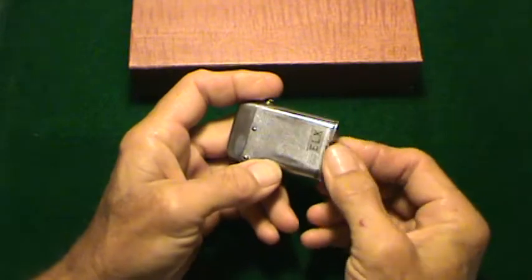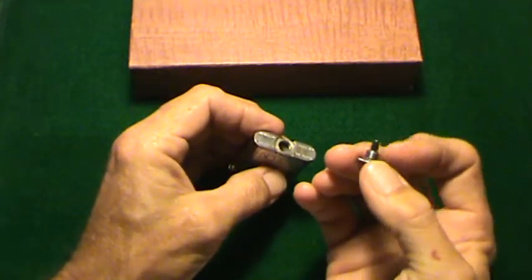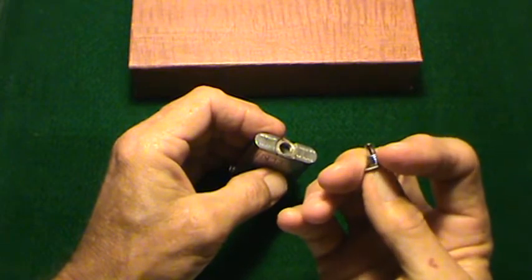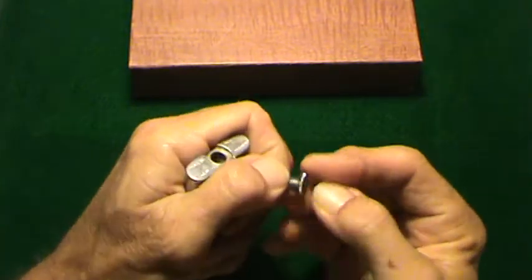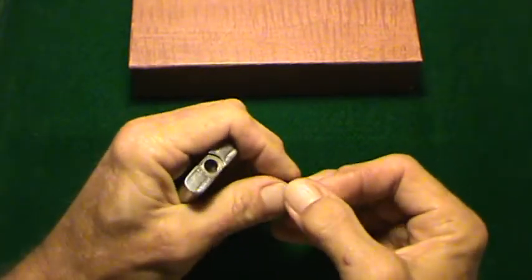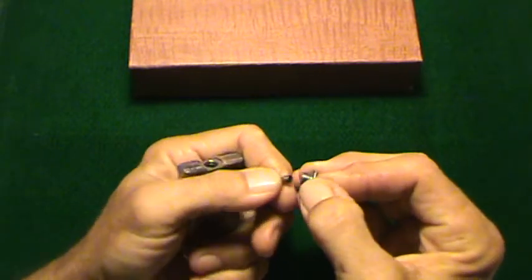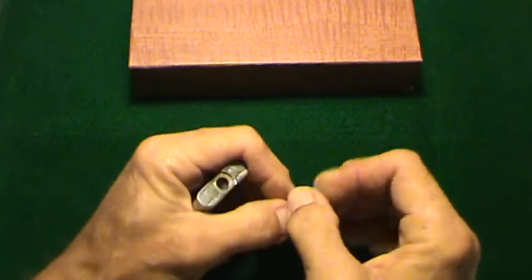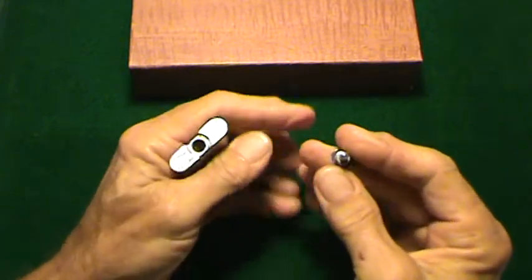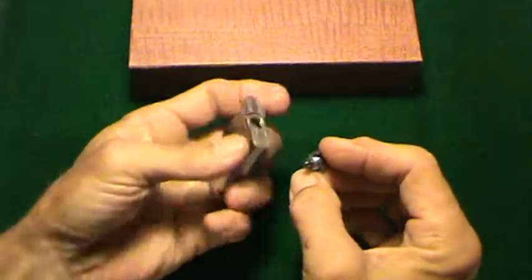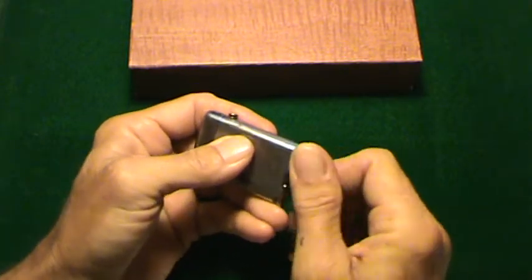They started making these in the 1930s, late 1920s, early 1930s. This has a spare flint holder in the fill cap. Just screw that little bugger off right there, put a spare flint in there. It has a little gasket on there. It just screws into the bottom, just like putting a flint in a Zippo lighter.